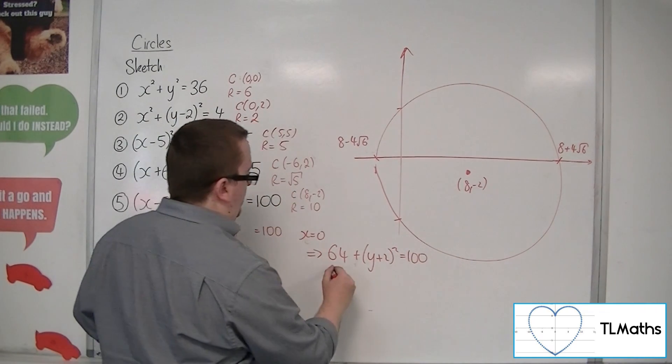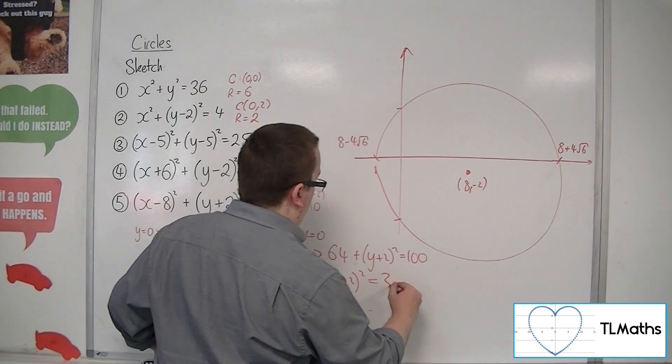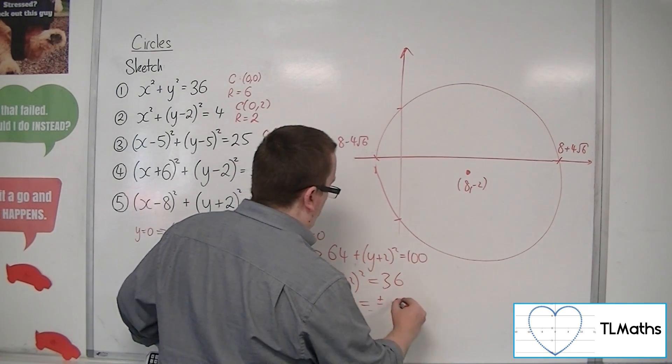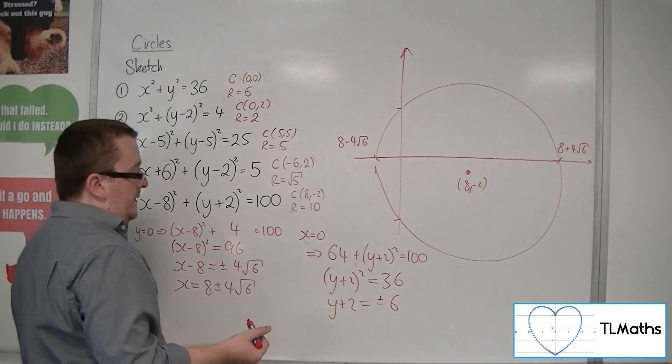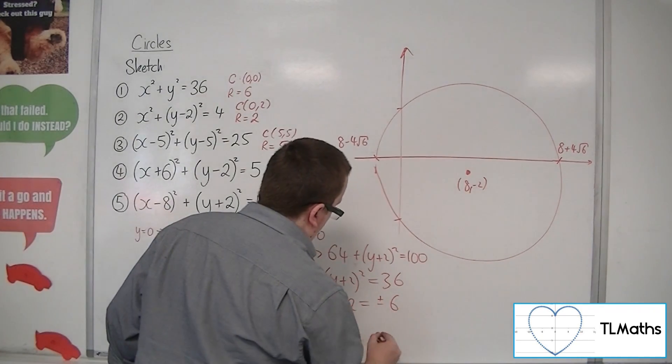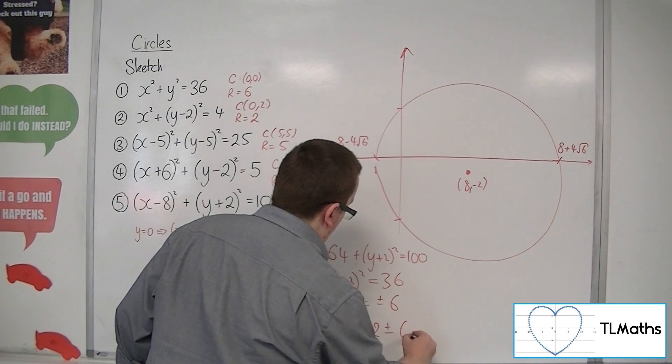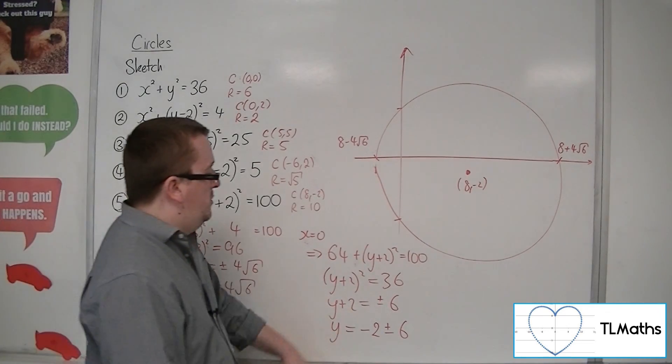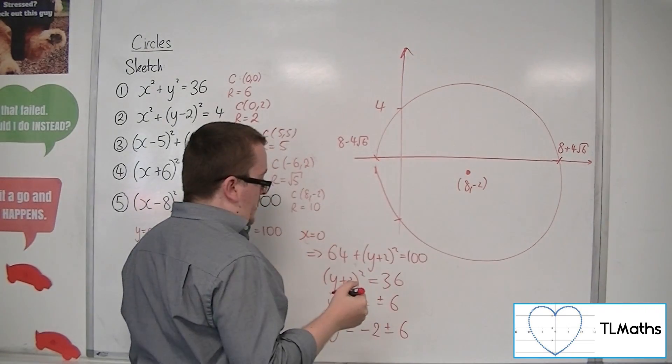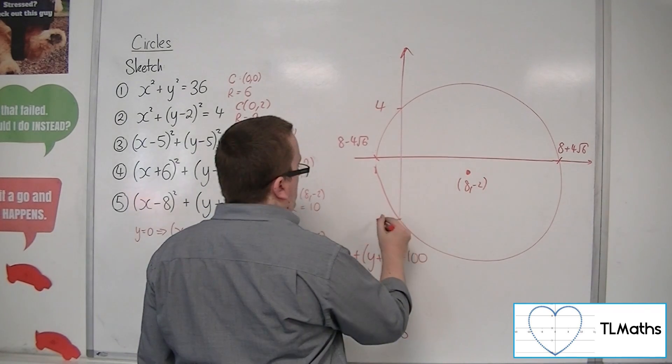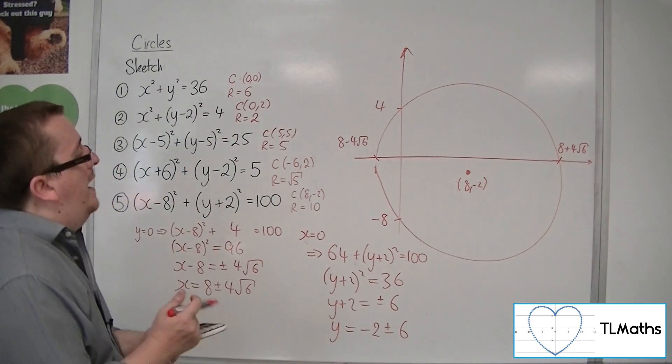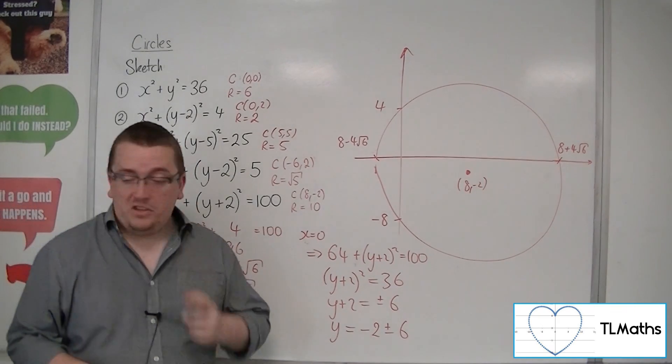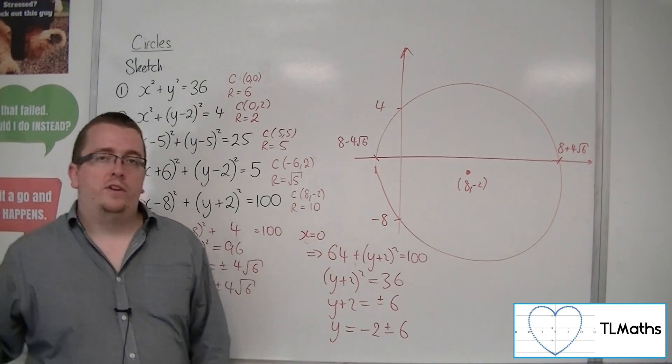Plus y plus 2 squared equals 100. So, subtract the 64 from both sides. It gives you 36. So, y plus 2 is equal to plus or minus 6, because that's the square root of the 36. And then, subtract the 2. So, minus 2 plus or minus 6. So, minus 2 plus 6 will give you 4. And, minus 2 minus 6 will give you minus 8. And, that is a sketch of number 5. Detailing precisely where the curve crosses the coordinate axes.